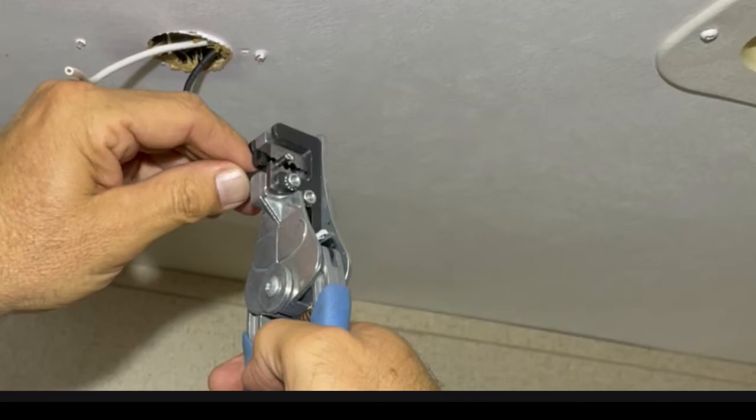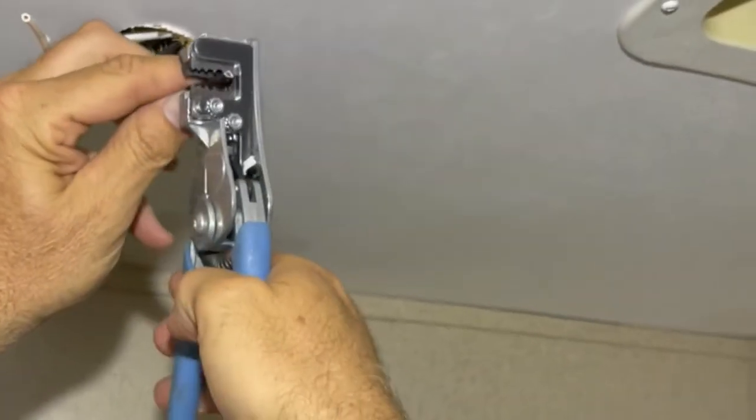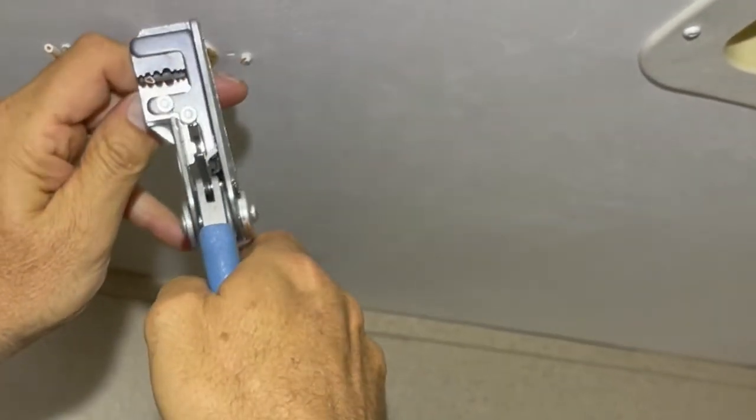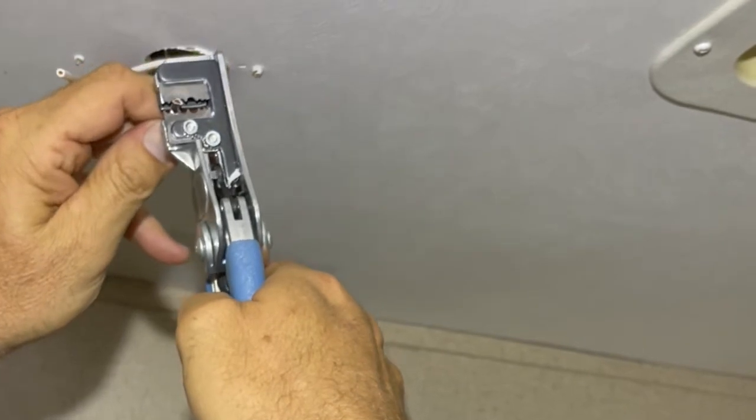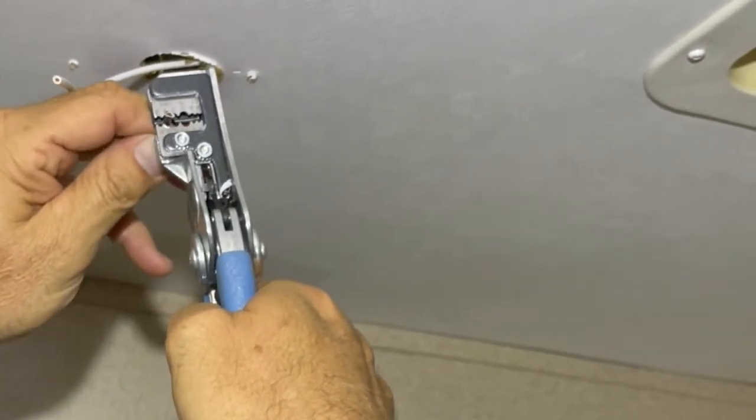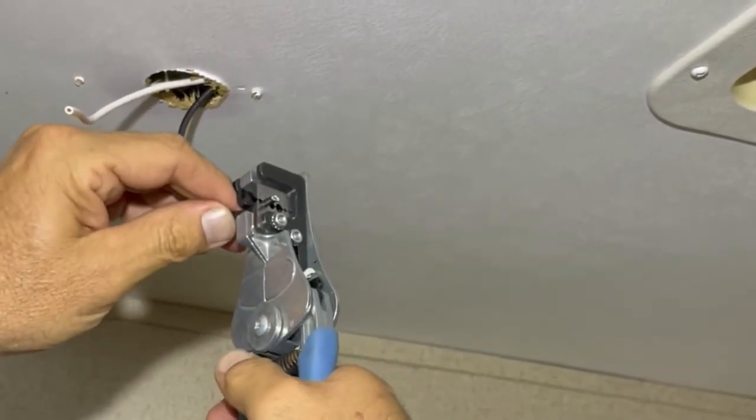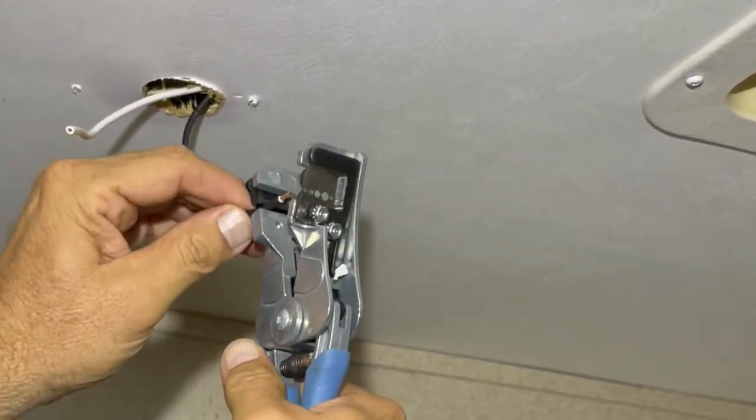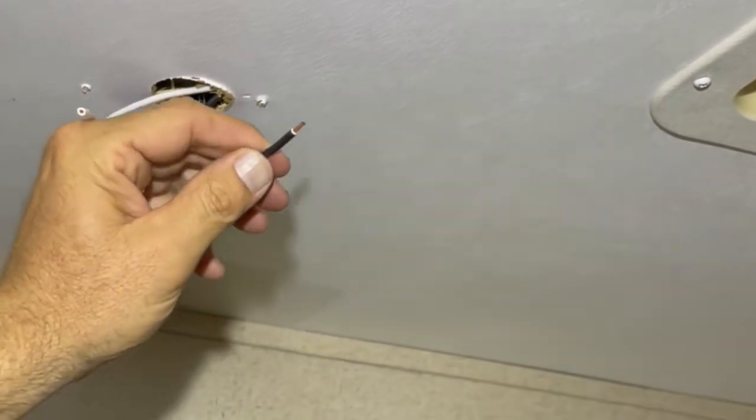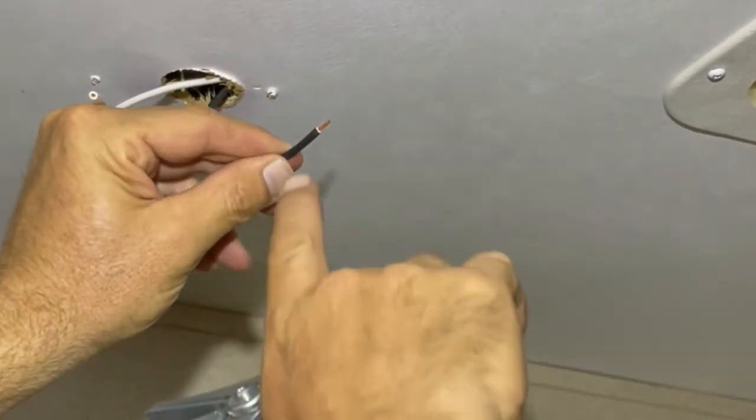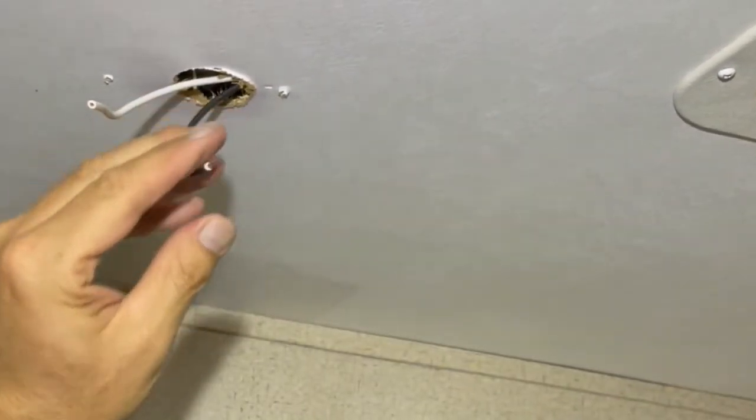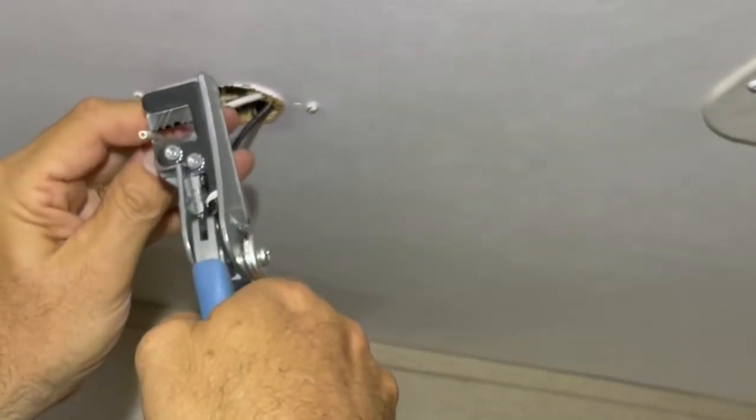The next step is to strip the wires. I'm going to put this on here and I need enough wire to go into the connector where I crimp it and it's about a quarter of an inch. And I strip it like that, I let it off and I come out. Now I have a nice copper wire to get a hold of.